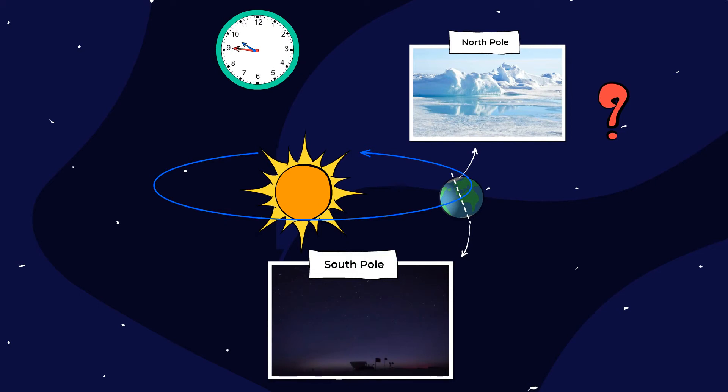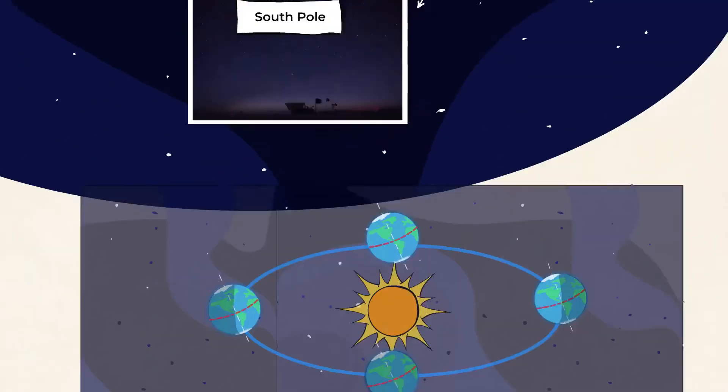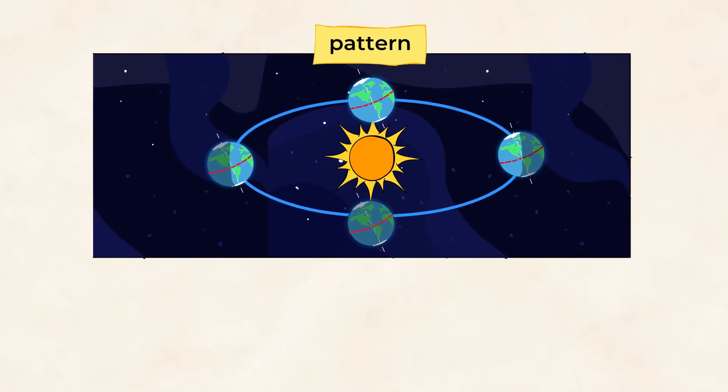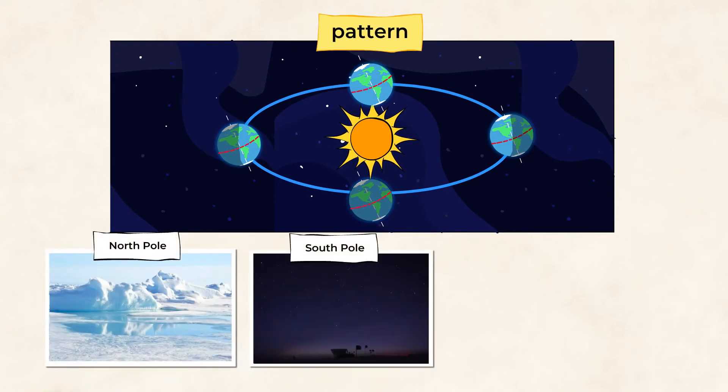But don't worry, it's not always like that. The North and South Poles follow their respective patterns and change places during the year. The other parts of the globe also follow a pattern, but it's not as extreme as the North and South Poles.